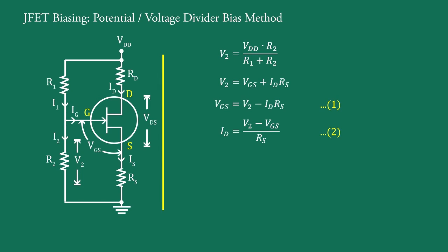And applying Kirchhoff's voltage law to this output section, we get VDD equal to IDRD plus VDS plus ISRS. Since here IG equal to 0,